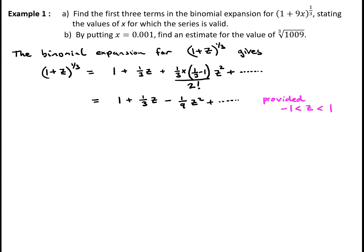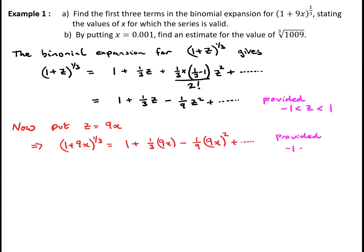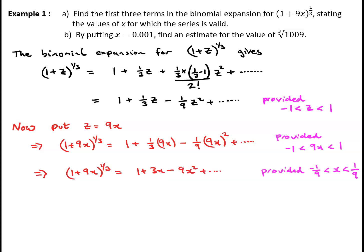If we now substitute 9x for z, we can say that the expansion of 1 plus 9x to the power of a third is going to be 1 plus a third of 9x minus a ninth of 9x all squared, provided the value of 9x lies between minus 1 and 1. A third times 9x gives 3x, and a ninth of 9x squared gives 9x squared. So this simplifies to 1 plus 3x minus 9x squared, provided x must lie between minus a ninth and one ninth.